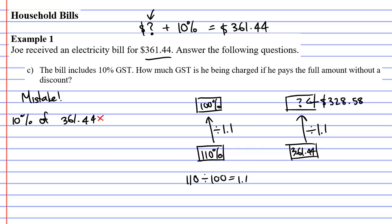To answer question C, we need to find 10% of $328.58. We're finding 10% of the original price before the GST was added. That's found by going 10 divided by 100 times 328.58, which is $32.86 when we round it up.